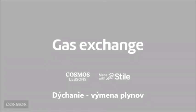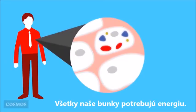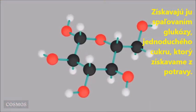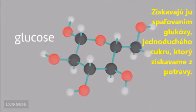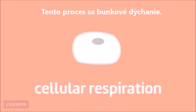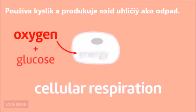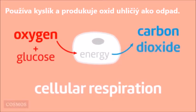Gas exchange. All of our cells need energy. They get it by breaking down glucose, a simple sugar we get from food. This process, called cellular respiration, uses oxygen and produces carbon dioxide as waste.